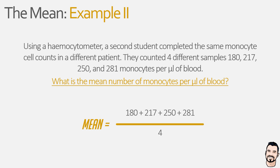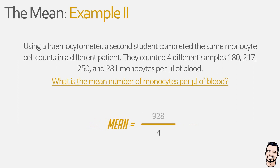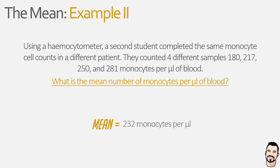We can simplify this equation by completing the top line and adding our values together, giving us 928, which is then divided by the number of observations — 4 — to give us a mean value of 232 monocytes per microlitre. So 232 is the average of our four data values.